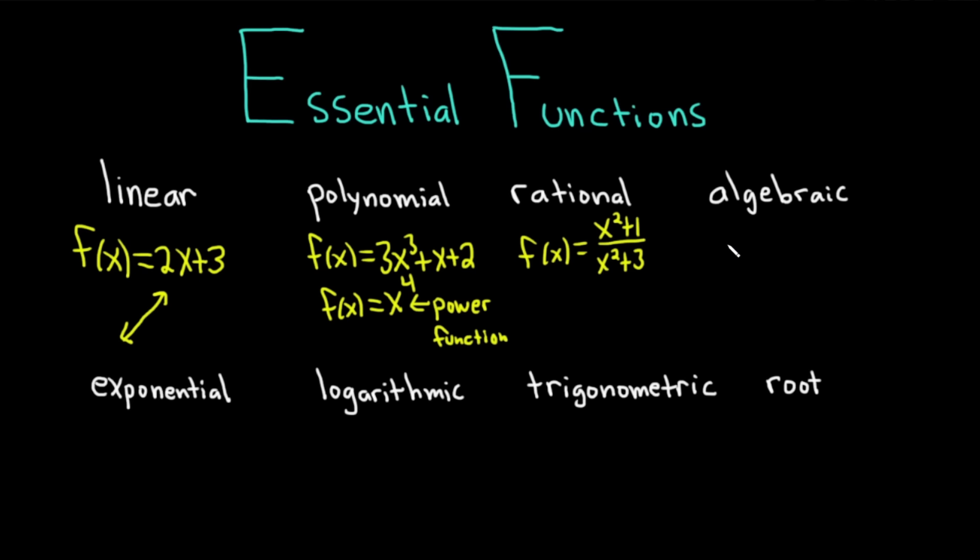An algebraic function is a function that you can get via algebraic operations, so like addition, subtraction, division, taking roots. So an example of an algebraic function would be something like the square root of x squared plus 7. That's an example of something that's algebraic.